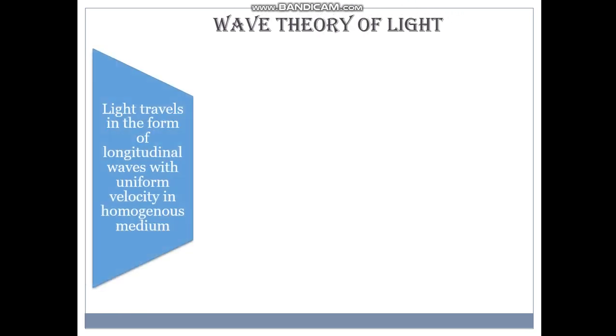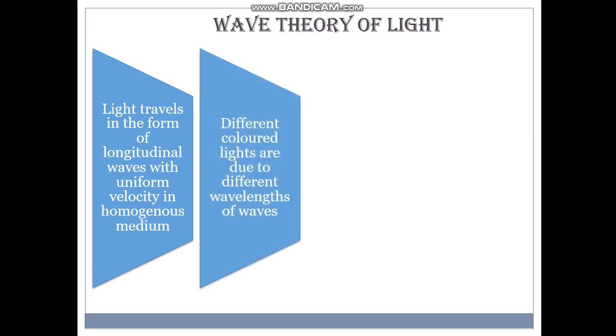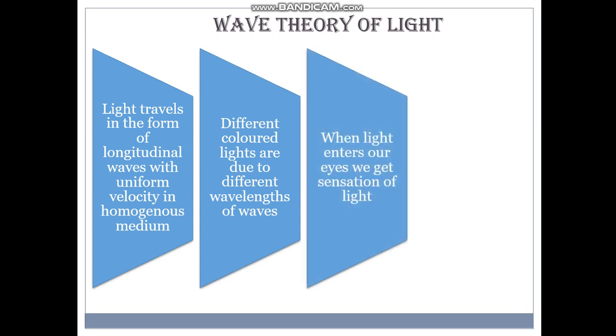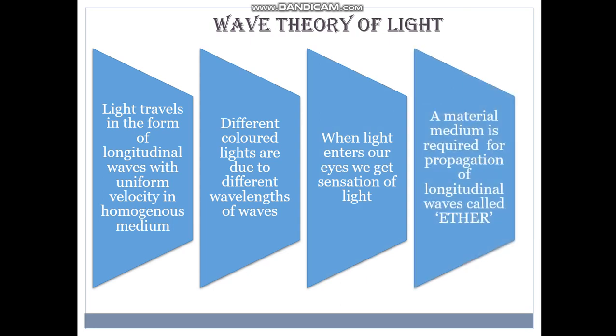Let's see what is wave theory of light. Light travels in the form of longitudinal waves with uniform velocity in homogeneous medium. Different colored lights are due to different wavelengths of light. When light enters our eyes, we get the sensation of light.